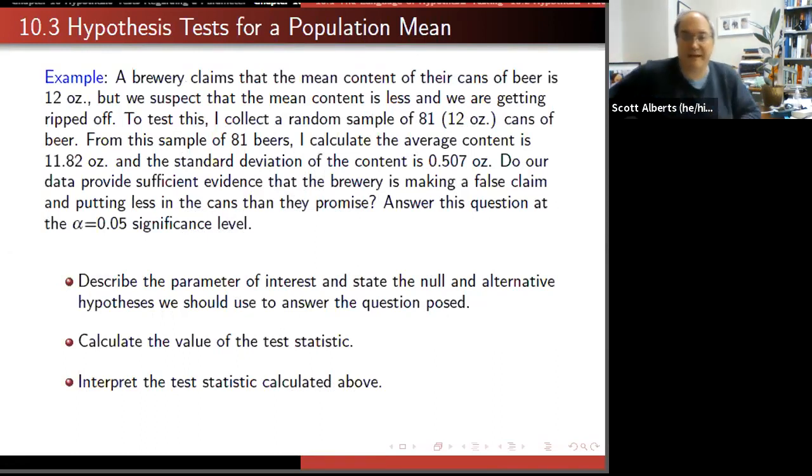Here's an example about beer. The brewery claims they have 12 ounces in every can, but we suspect that maybe the mean is getting smaller and we're getting ripped off. I go out and collect a random sample of 81 cans of beer. We picked 81 so that we could do the square root really easily. I calculate that the average amount of beer in each one is 11.82 ounces. I had to pour each can into a scale and weigh it, and the sample standard deviation was 0.507 ounces.